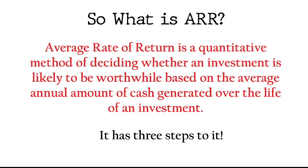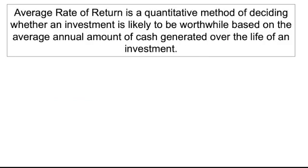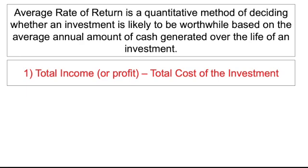It has three steps to it. First of all, recognize what your total income is — you might have to calculate that total income. In GCSE it's also considered to be profit. That total profit still has to exclude the cost of the investment. So you find out your total income or total profit, then you minus the total cost of the investment — whatever the cost of the machine is, for example.